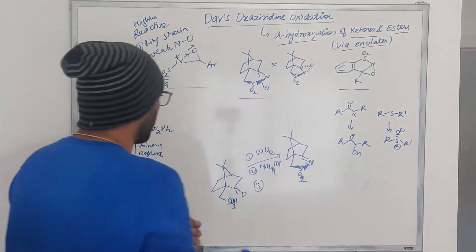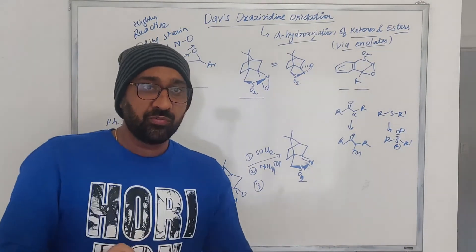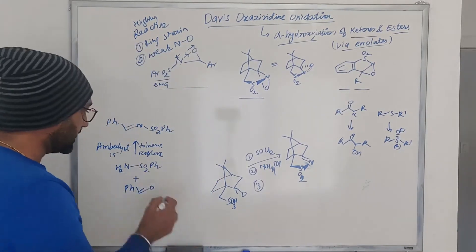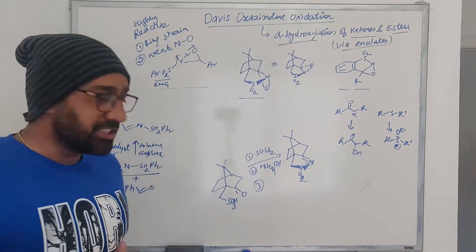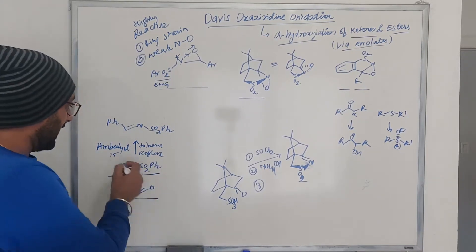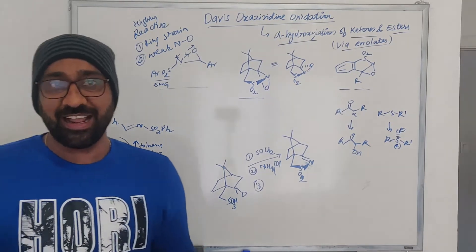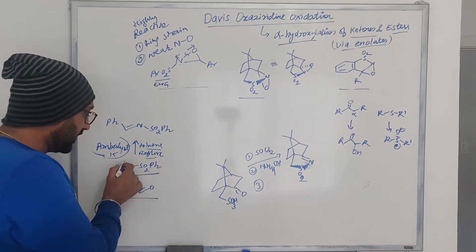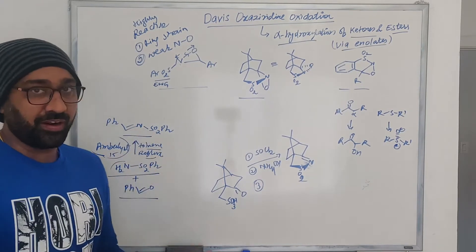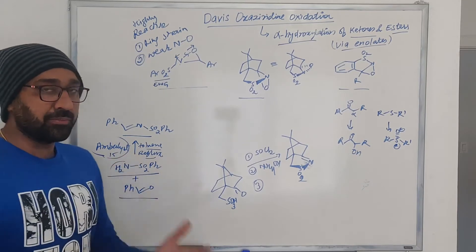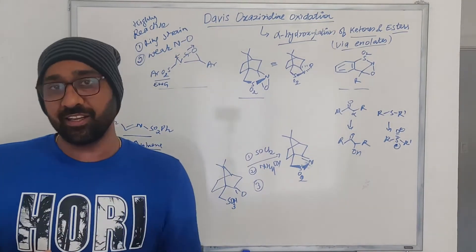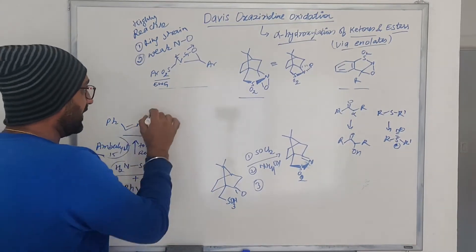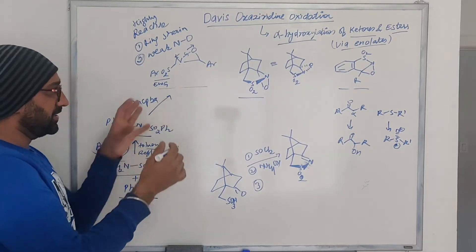Let us talk about how to make such reagents, since in an exam you may be asked about this. We start from benzene sulfonamides and take benzaldehyde. We use an Amberlyst catalyst, which is an acidic resin — it is not a catalyst, it is a resin. We are forming an imine, and whatever water is produced is absorbed in the resin. The resin is acidic in nature, providing the acidic environment required for imine formation. Once you have this imine, you treat it with MCPBA for oxidation.